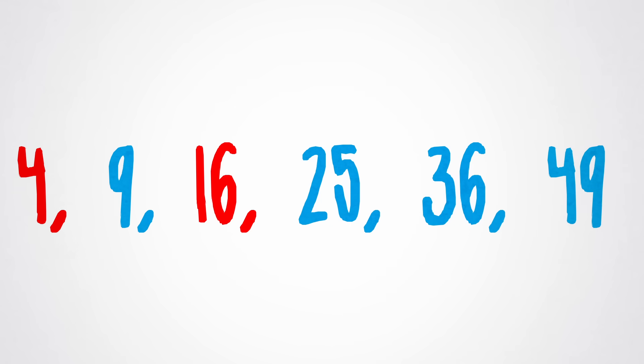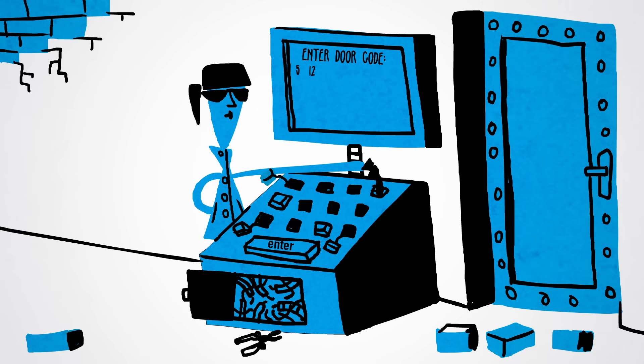You look at the other possible options for numbers you could take the square root of. 9 you can't reach. 25 and 49 would take you back to 5 or 7, and you can already get to each of those. 36 is your only option. You add 5, 7, 5, 7, 5, 7, and then hit the square root button.